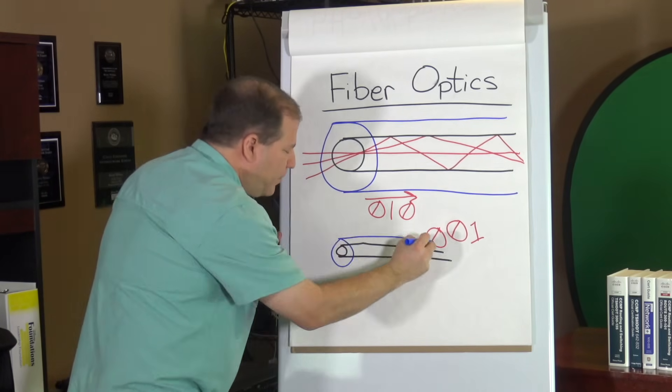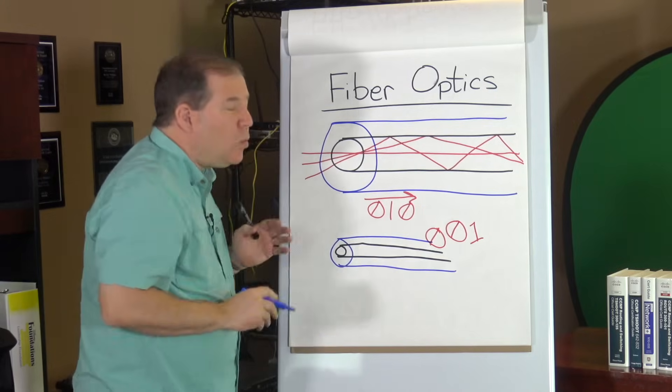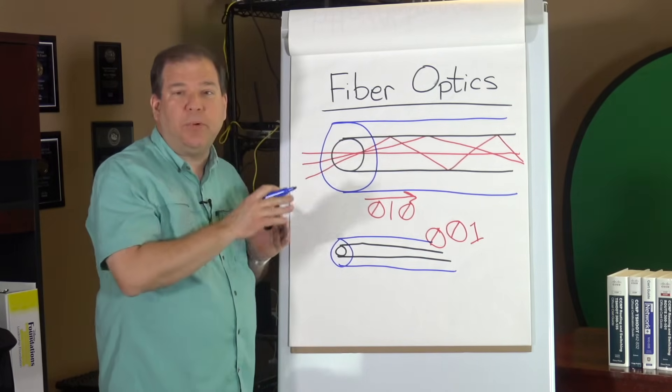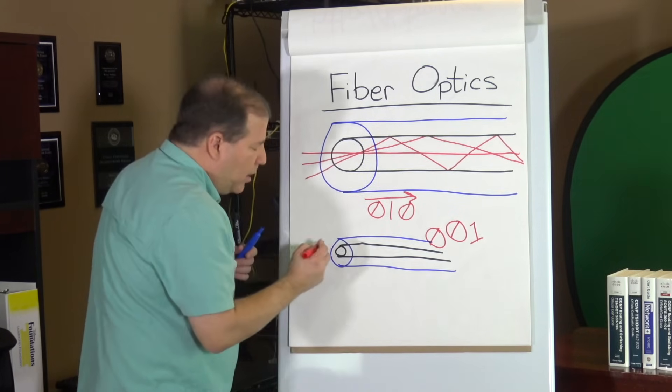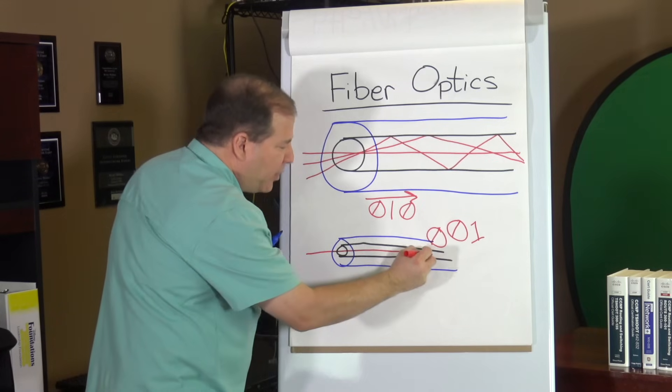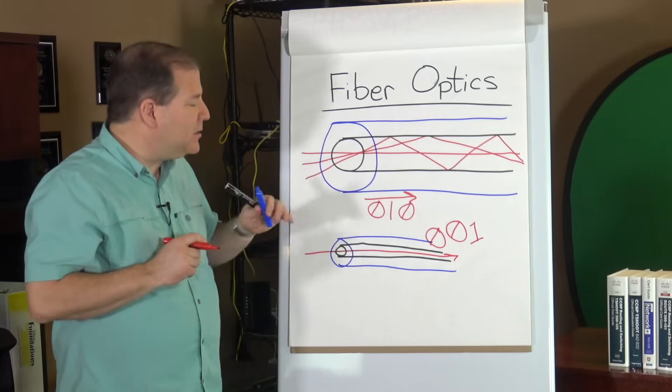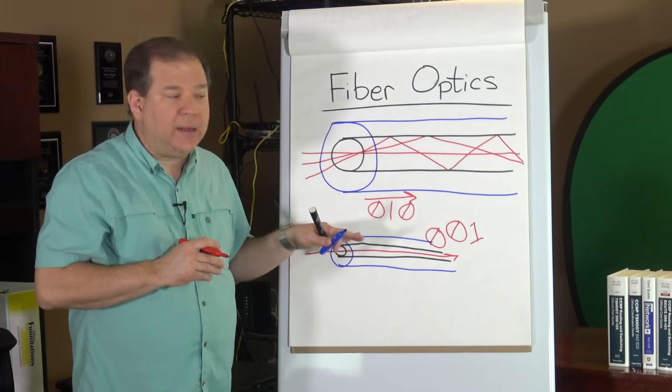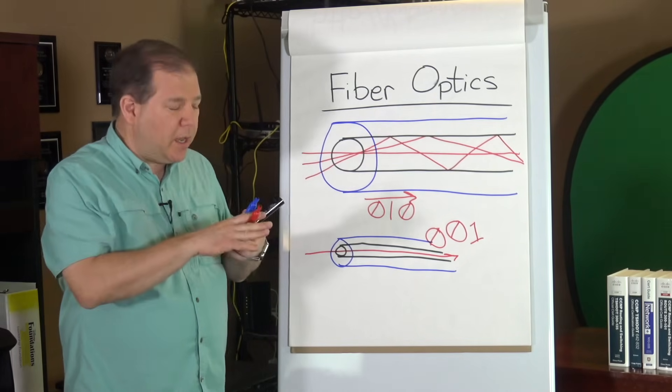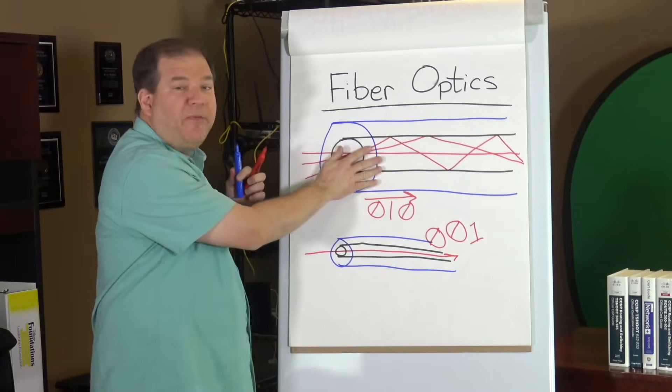Another way to address this issue is to simply have a smaller core. However, with a smaller core, there's not room for all these different modes of propagation. There's only room for light to take one path down that fiber optic cable. And as a result, we don't have to worry about this multi-mode delay distortion.